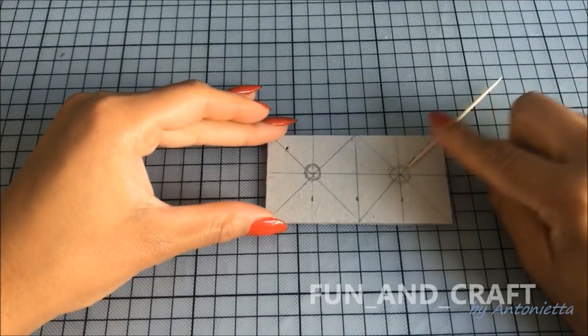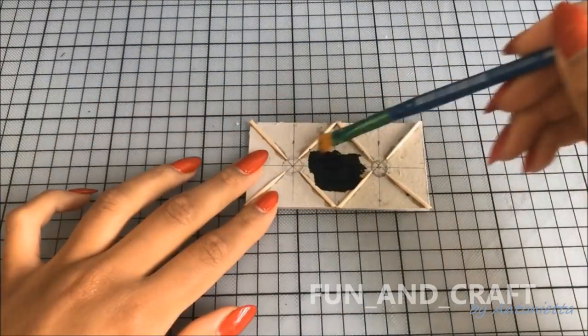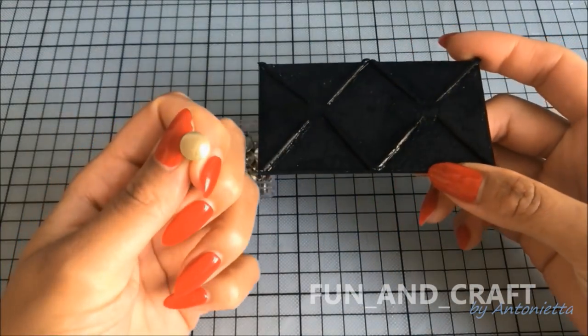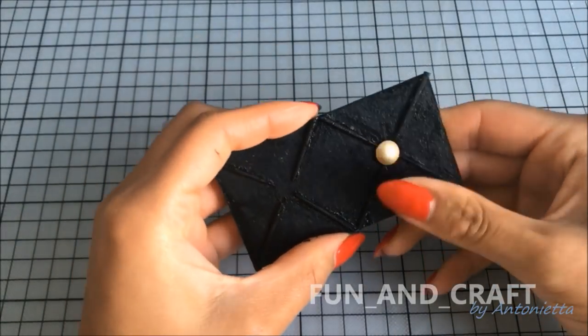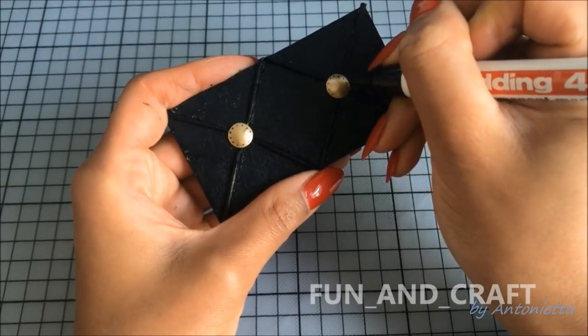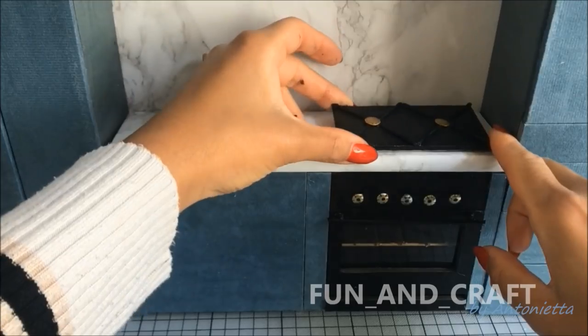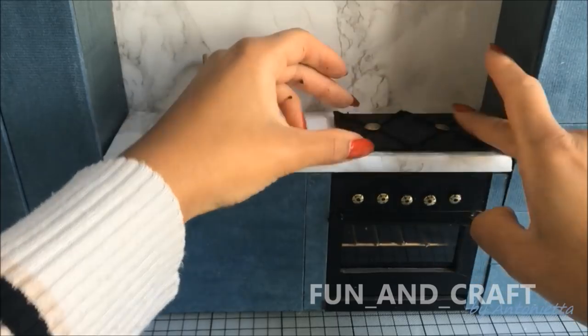Make a stove by gluing toothpicks to a rectangle piece of paperboard. Paint it black and place two thumbnail tags on each side. Use a marker to draw tiny dots around the edges of the thumbnail tags.